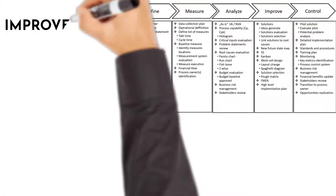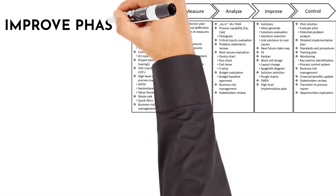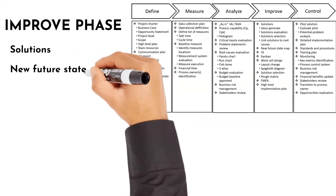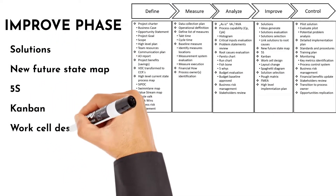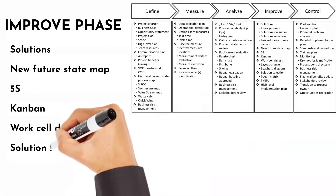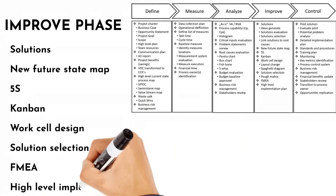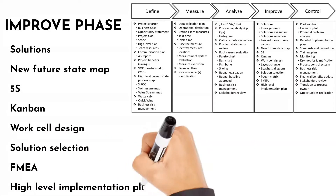The Improve phase includes: solutions, new future state map, 5S, Kanban, work cell design, solution selection, NIA and high level implementation plan.